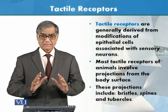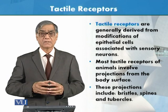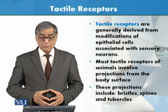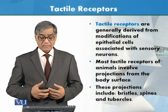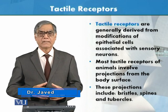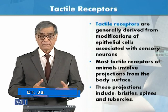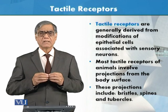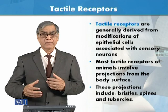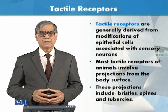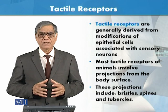Tactile receptors have a definite structure. Most tactile receptors of animals involve projections from the epithelial surface, and these projections we have designated as bristles, spines, and tubercles. Bristles are seen in earthworms, spines are found in other animals, and in insects the exoskeleton is modified into spines which are very sharp.